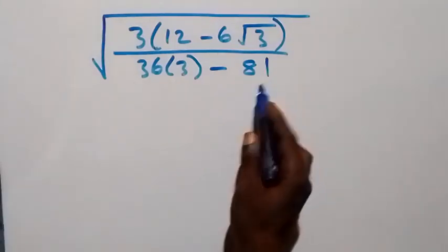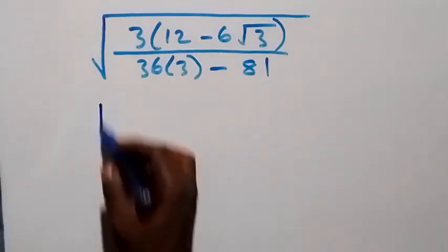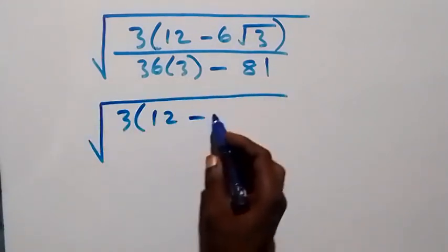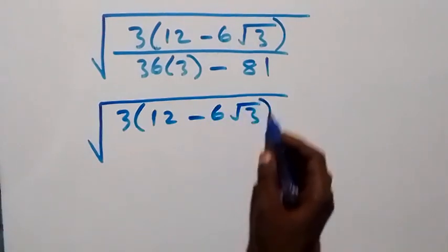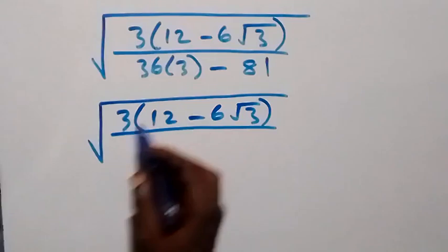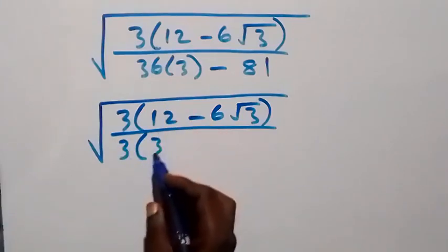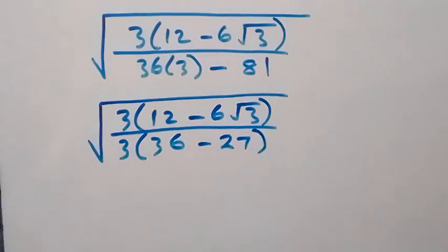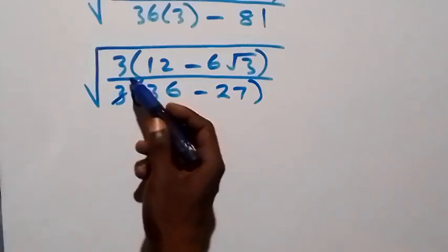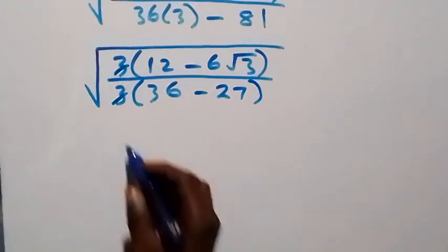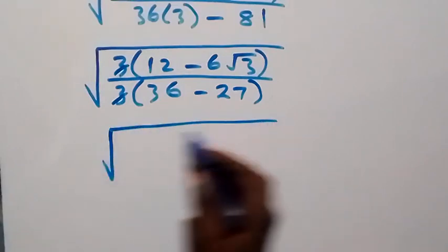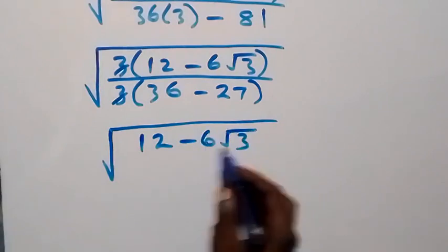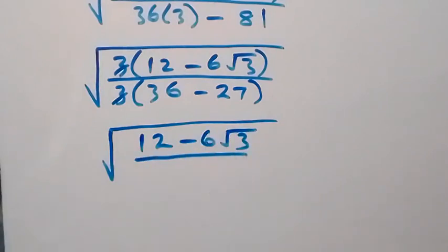From the numerator, 3 is also common from the denominator, so we have square root of 3 into bracket (12 minus 6 root 3), divided by 3 into bracket (36 minus 27). From here, the 3's cancel each other, and what we are left with is square root of (12 minus 6 root 3) divided by (36 minus 27), which gives 9.